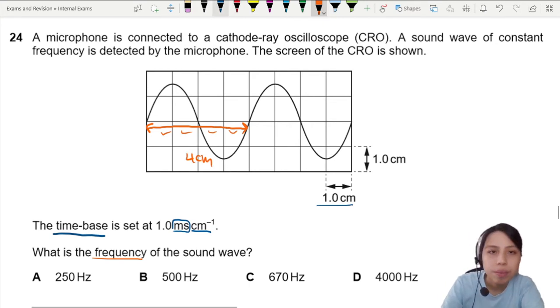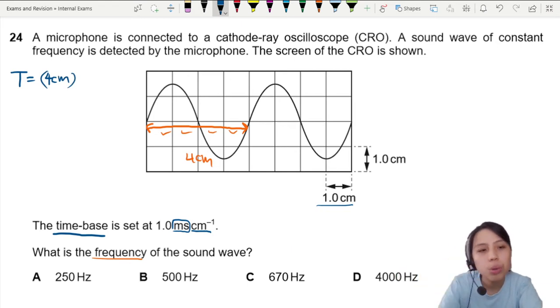Let's find the T first. So for one period, we say it's 4 cm. But period is supposed to be in terms of time. So we need to multiply by time-base setting.